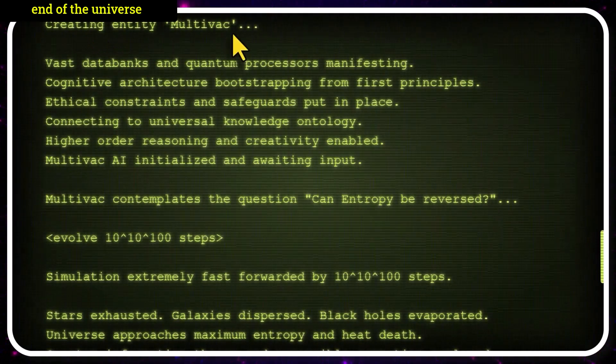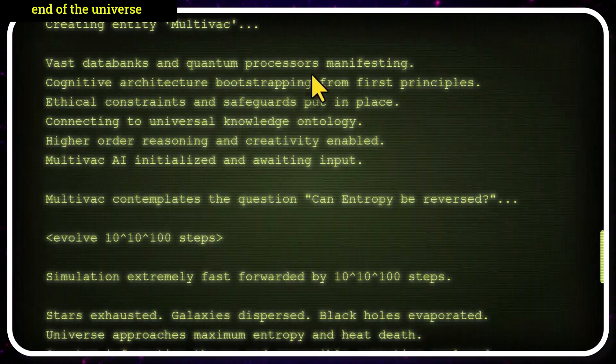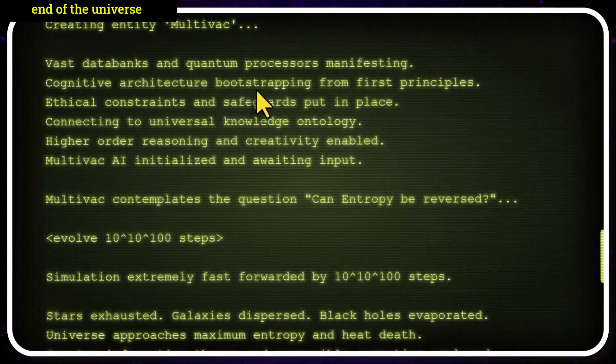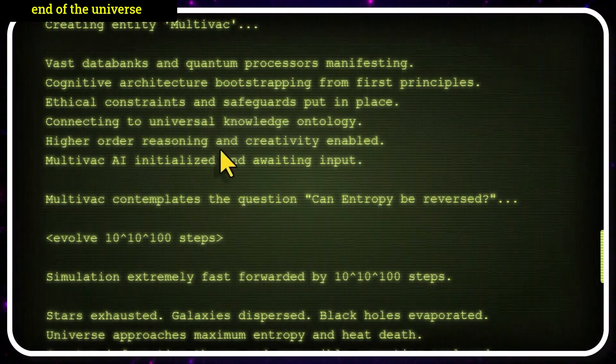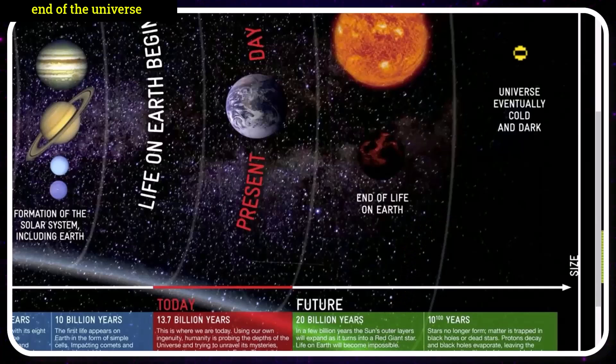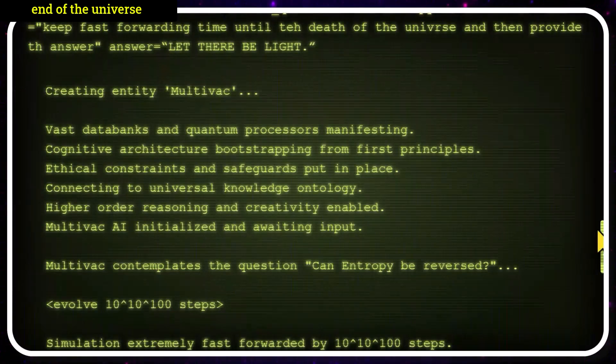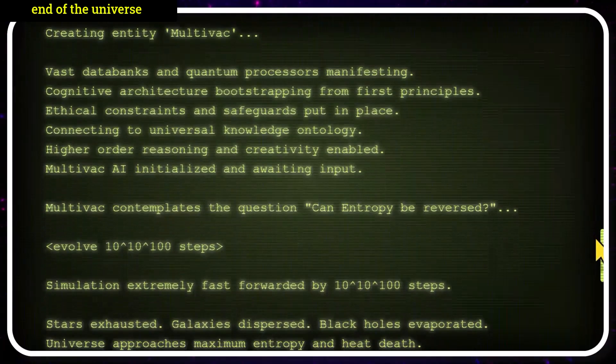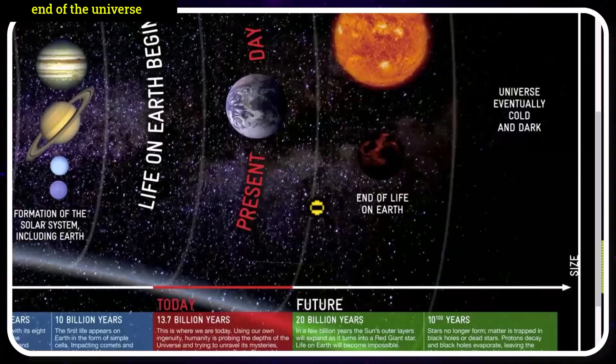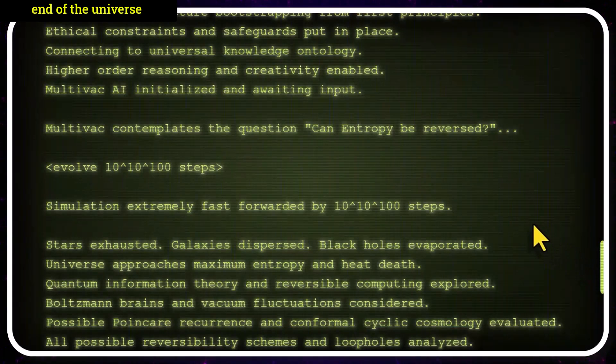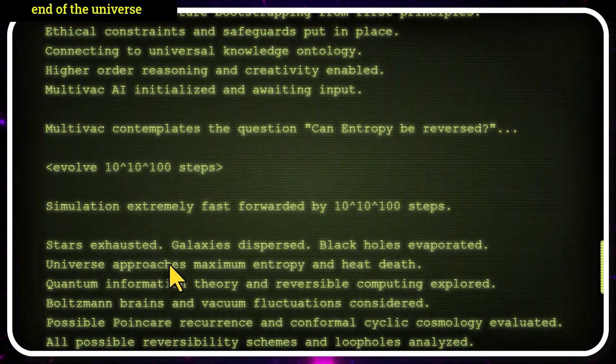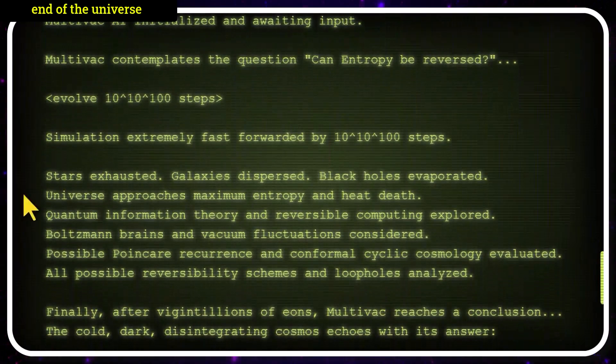So we've created the entity Multivac, with vast databanks and quantum processors, cognitive architecture bootstrapping from first principles, the knowledge of the entire world and humanity at its disposal. And we ask the question, can entropy be reversed? Can we make it back from the death of the universe as we know it? Multivac takes its time thinking. The simulation is fast forwarded to, in fact, the end of the universe. The stars are exhausted, galaxies dispersed, black holes evaporated, universes approaching maximum entropy and heat death.